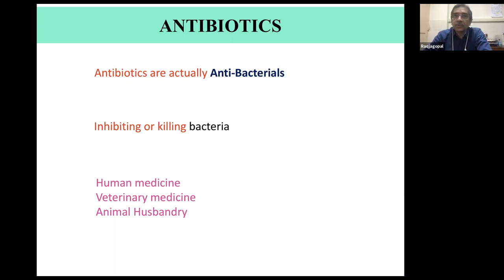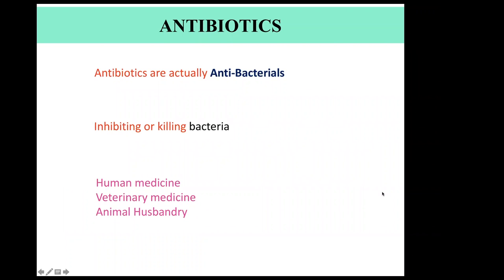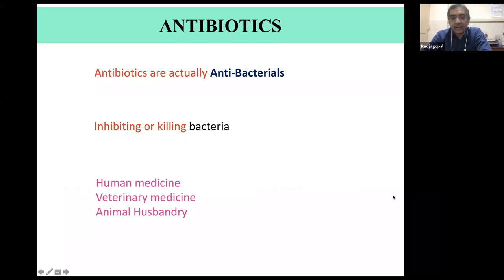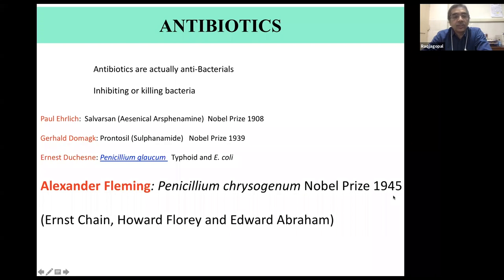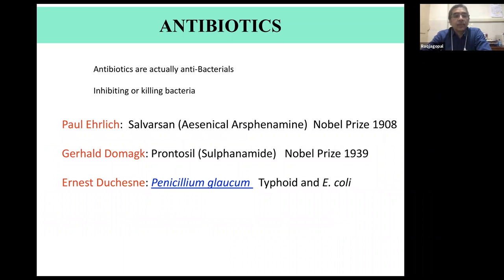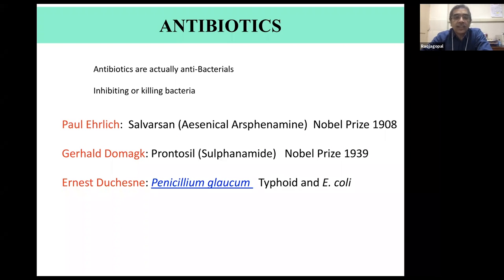Who discovered antibiotics? Penicillin was discovered by Alexander Fleming. But much before Fleming, there was Paul Ehrlich, who worked with chemical dyes — the first compounds screened for antibacterial effect. He found arsphenamine, commonly called Salvarsan, which was marketed by the company Hoechst. He won the Nobel Prize in 1908 for this invention.